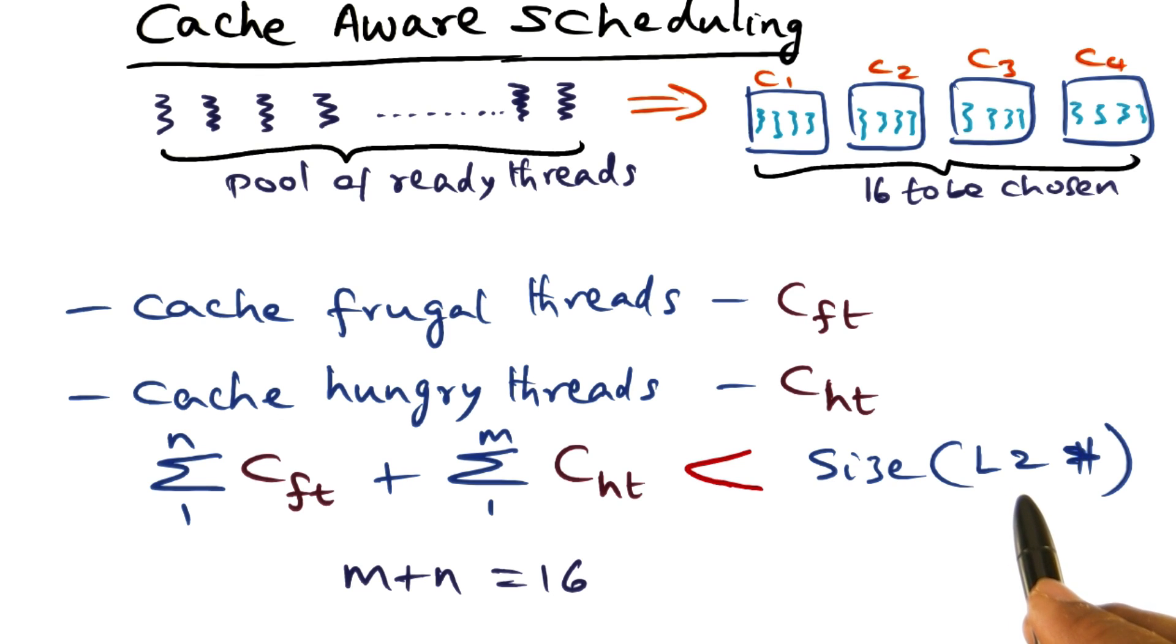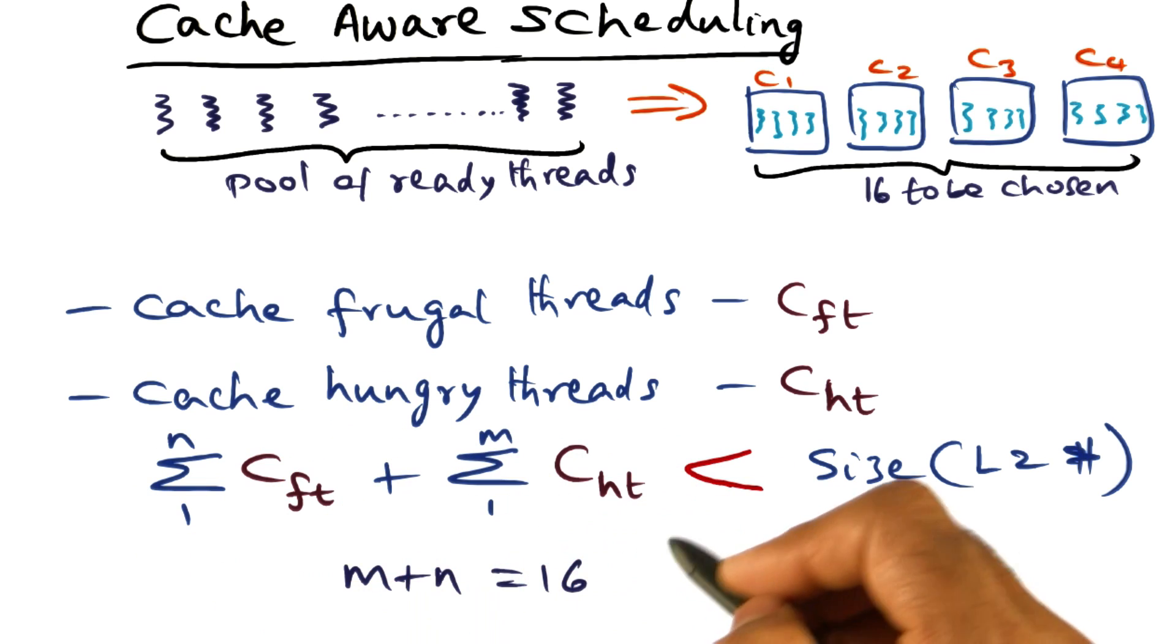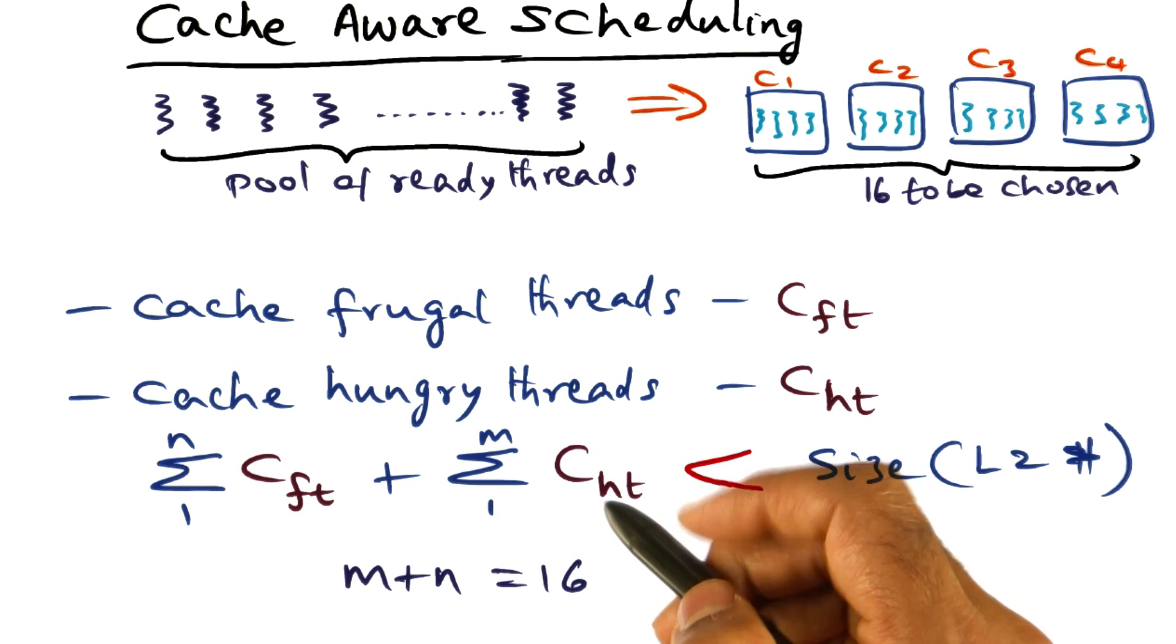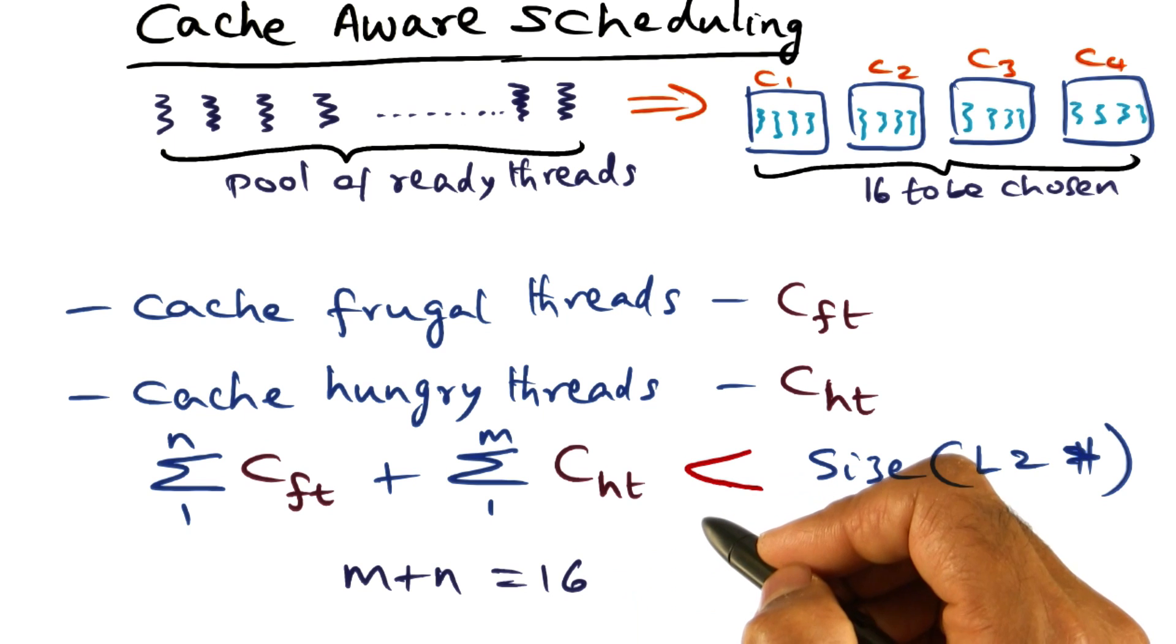That is the cache that is sitting at the last level inside the CPU, beyond which you had to go out of the chip, go out to memory. And so that last-level cache becomes the determinant in saying whether the size of the last-level cache is within bounds of the cache requirements of all the threads that I want to schedule. So this is the set of threads that I want to pick.